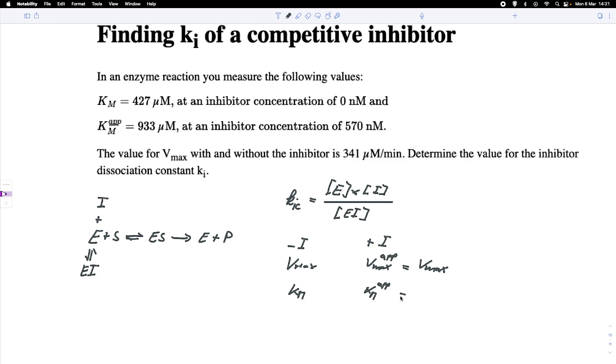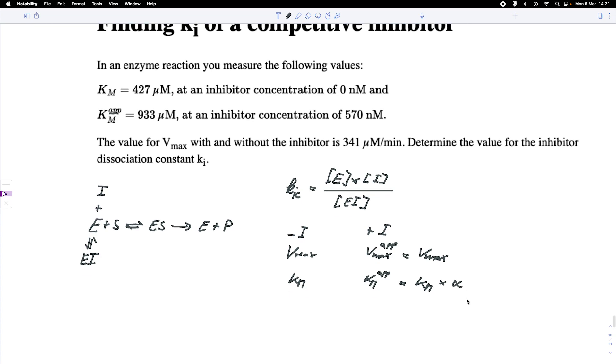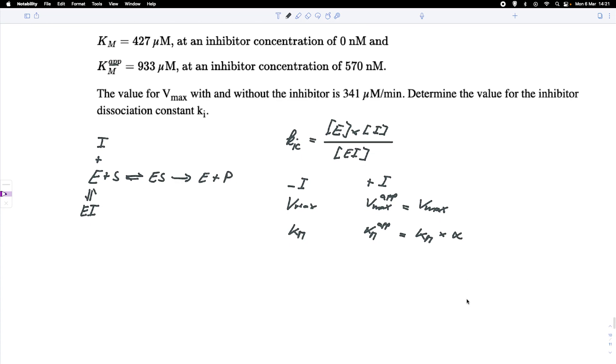However, the KM up changes, and this would be KM times alpha, and alpha is just simply the inhibitor factor.